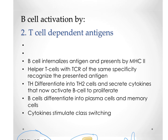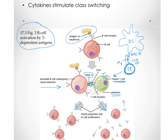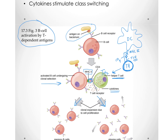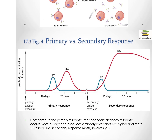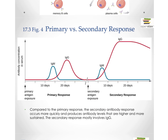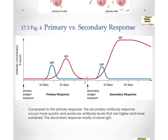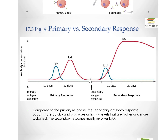Remember the T cell-independent antigens: that's a quicker activation, not as good a response, only IgM antibodies produced and no memory. Plus, young children don't have a very good response to those kinds of antigens. So if we add a little more detail to this, we're looking at the primary versus the secondary response for T-dependent antigens.